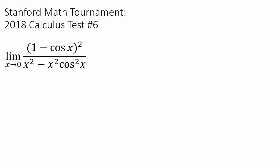Let's try out another question from Stanford Math Tournament. We have this limit as x approaches 0 of (1 - cos x)² over x² - x² cos² x.